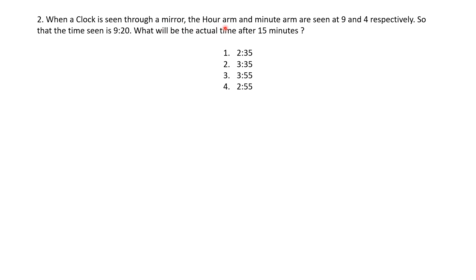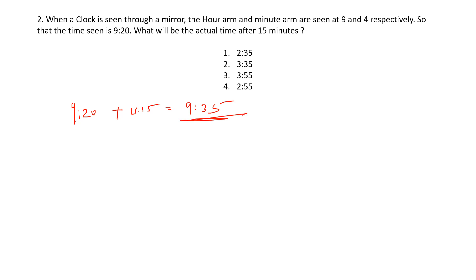Now let's discuss the second question. When a clock is seen through a mirror, the hour hand and minute hand are at 9 and 4 respectively, meaning the mirror shows 9:20. What will be the time after 15 minutes? So we consider 9:20 plus 15 minutes, which comes to 9:35 — that is the actual time shown in the mirror.